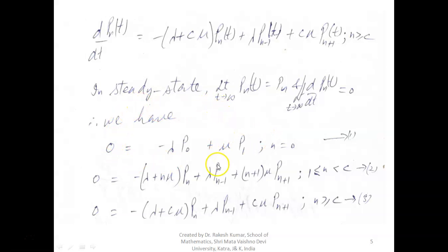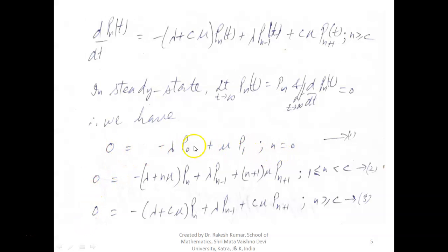In a steady state, that is when time is very large, t tending to infinity, p_n(t) becomes independent of time and is denoted by simply p_n. Therefore the limit d/dt p_n(t) becomes 0. We then have three equations from the above, as the derivatives are 0 and the probabilities are independent of time — we remove t. Let us call them equations 1, 2, and 3.